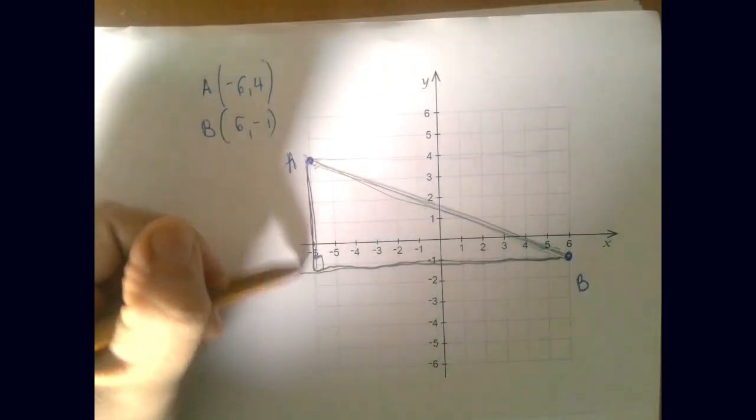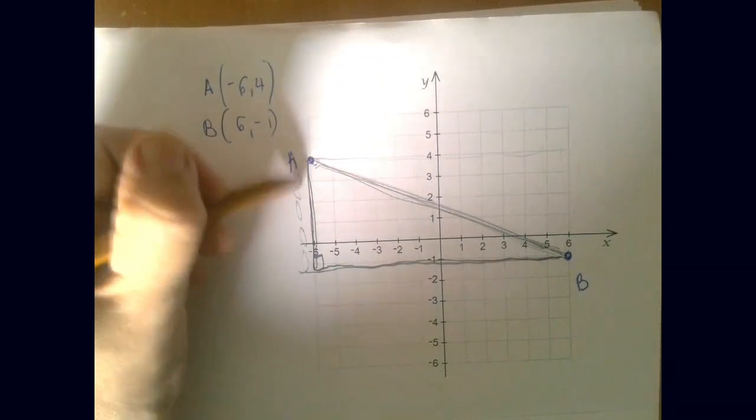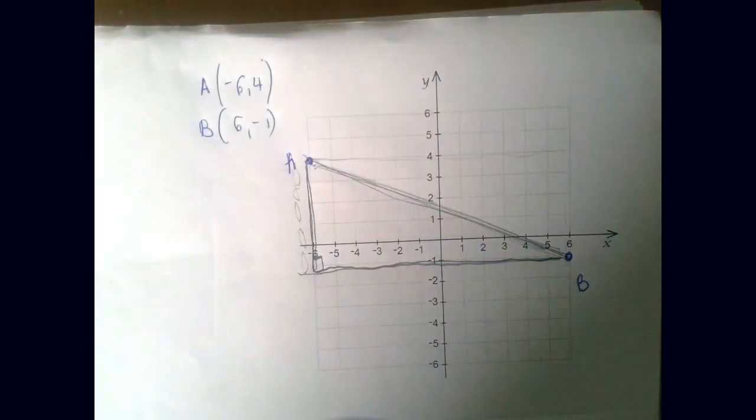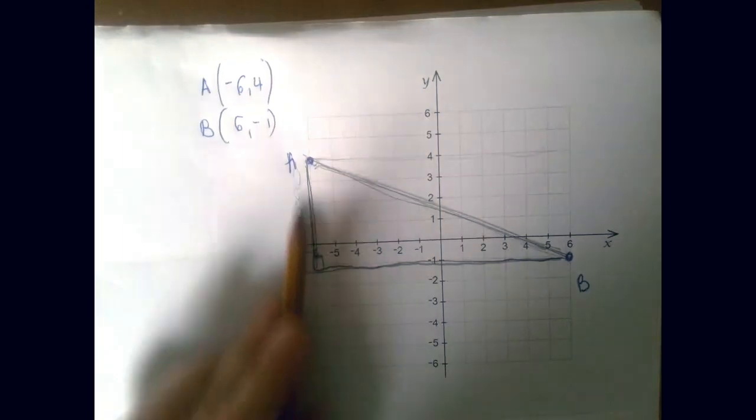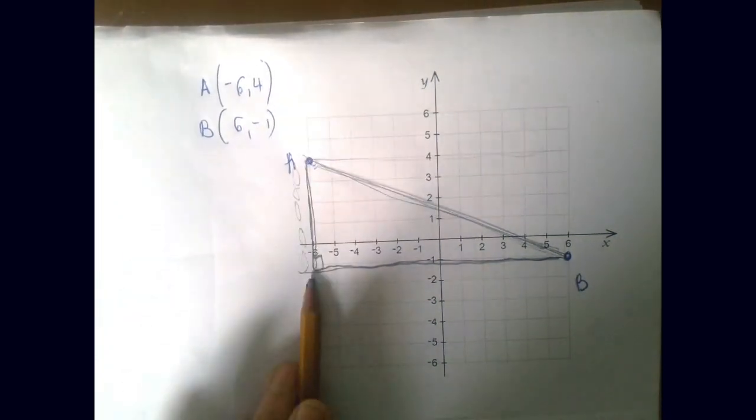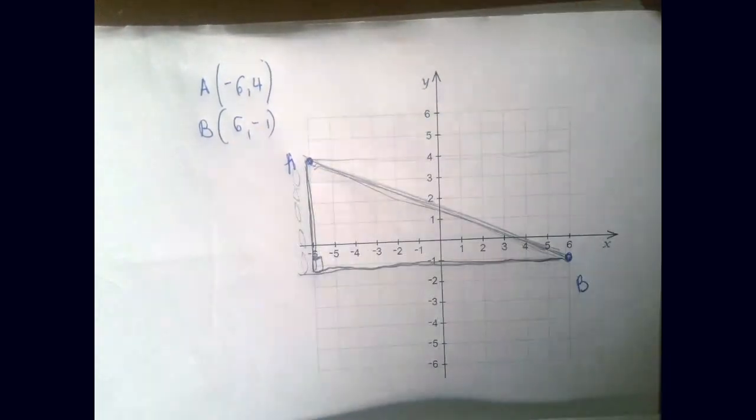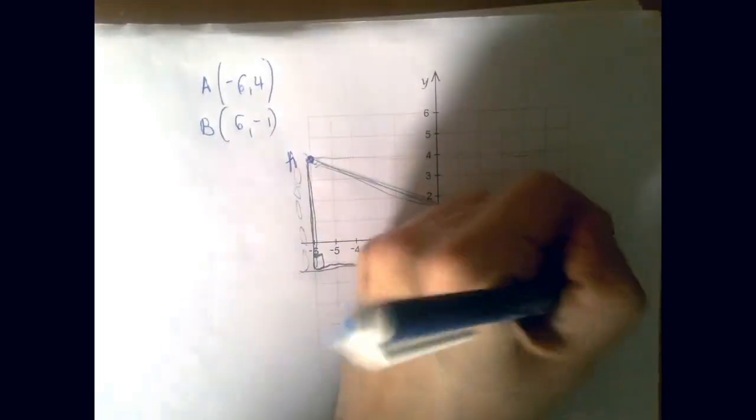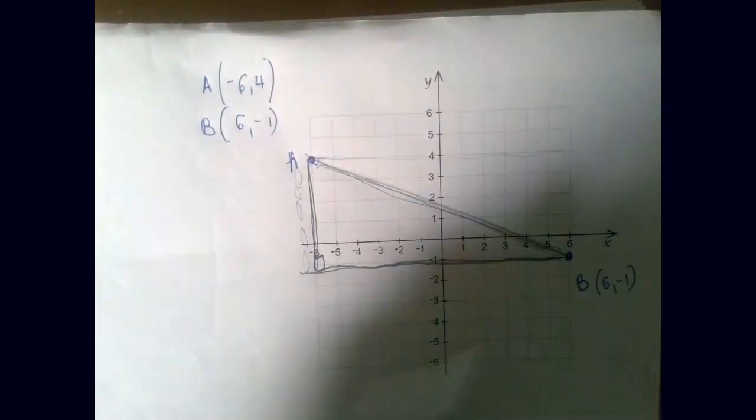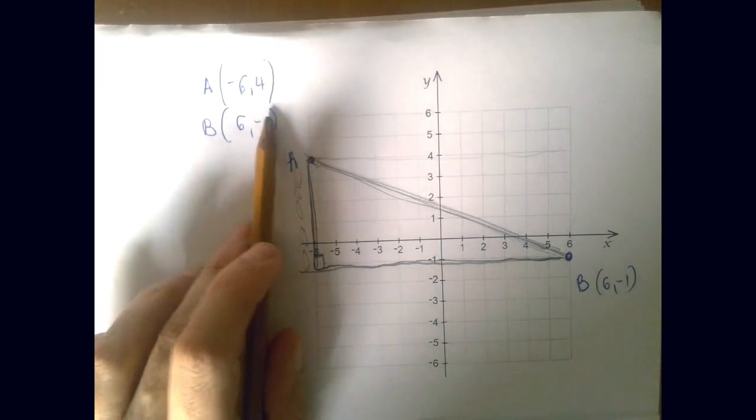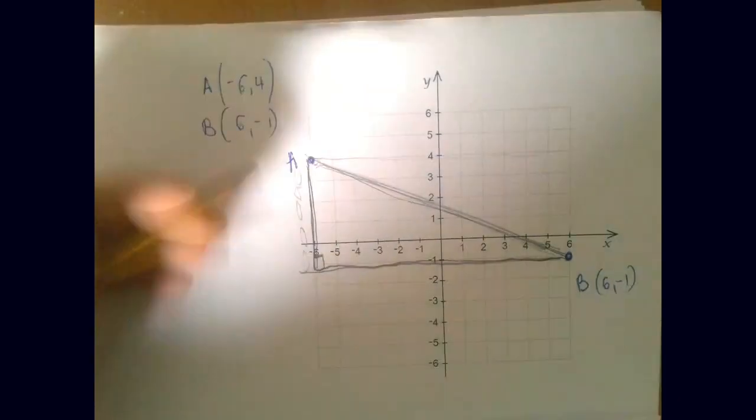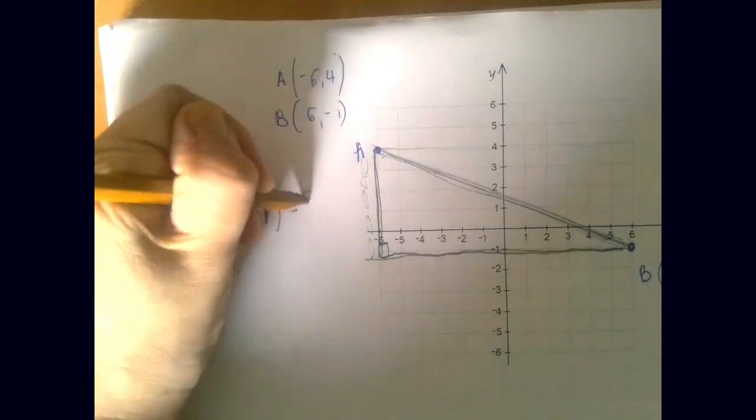Now we can either count how many line segments long this is, but we get the same result if we just subtract the corresponding coordinates. So this is a vertical line. This is about the Y coordinates, right? B is a point with Y coordinate -1, and A is a coordinate with Y coordinate 4. If you subtract the 2, we get the distance.